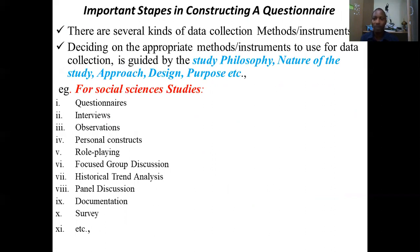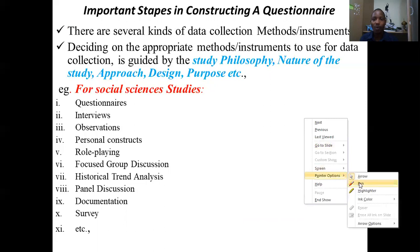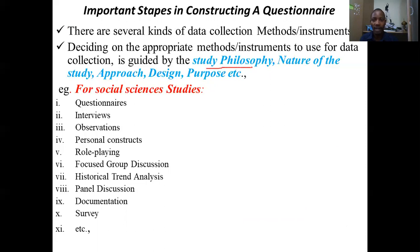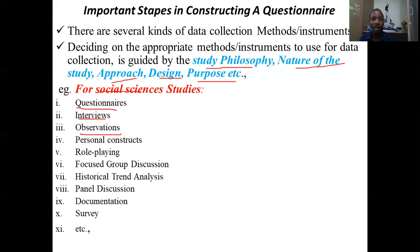We have several instruments used in data collection, and the decision of which method to use depends on several factors: the philosophy of the study, the nature of the study, the approach, the design, and the purpose of your study. For social-related non-experimental studies, we have the questionnaire, interview, observation, personal construct, role playing, focus group discussion, historical trend analysis, documentation, survey, and other methods.